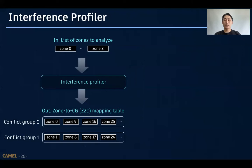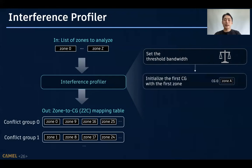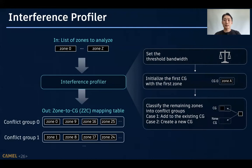Our interference profiler analyzes the zone-to-conflict group mapping by using the simple decision process that I explained. We only need to give a list of zones to analyze. And I can summarize the process of our profiler as follows. It first sets the threshold bandwidth, which is required to determine whether the bandwidth is high or low. Then, it creates the first conflict group with the first zone. It then classifies the remaining zones into conflict groups by adding it to the existing group or creating a new conflict group.